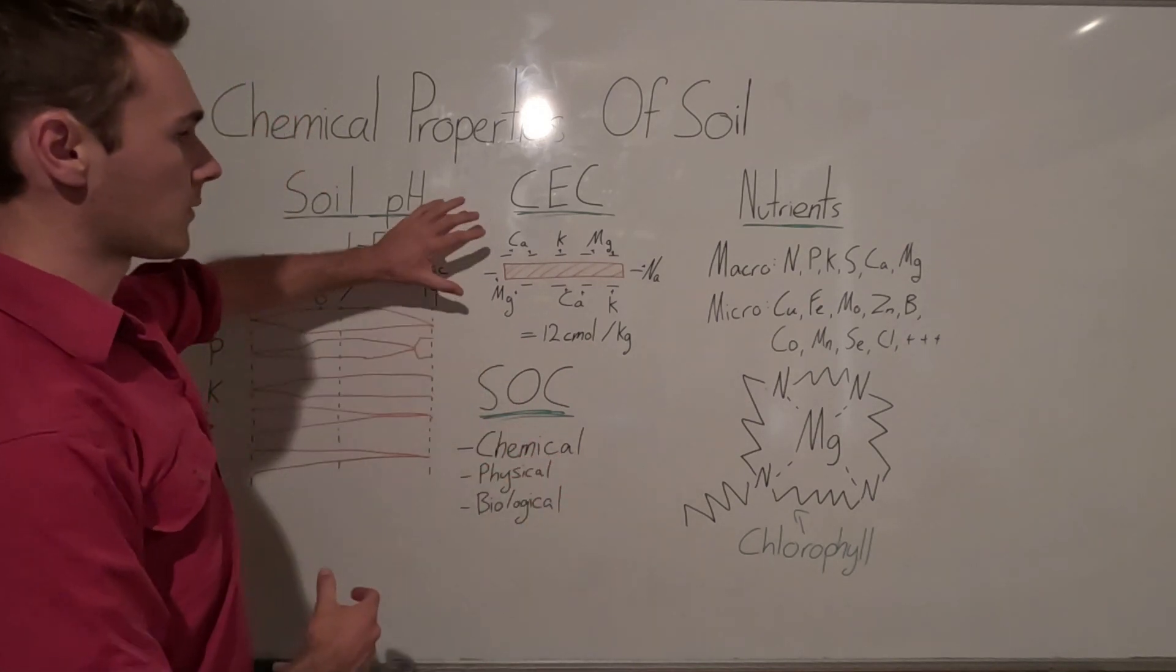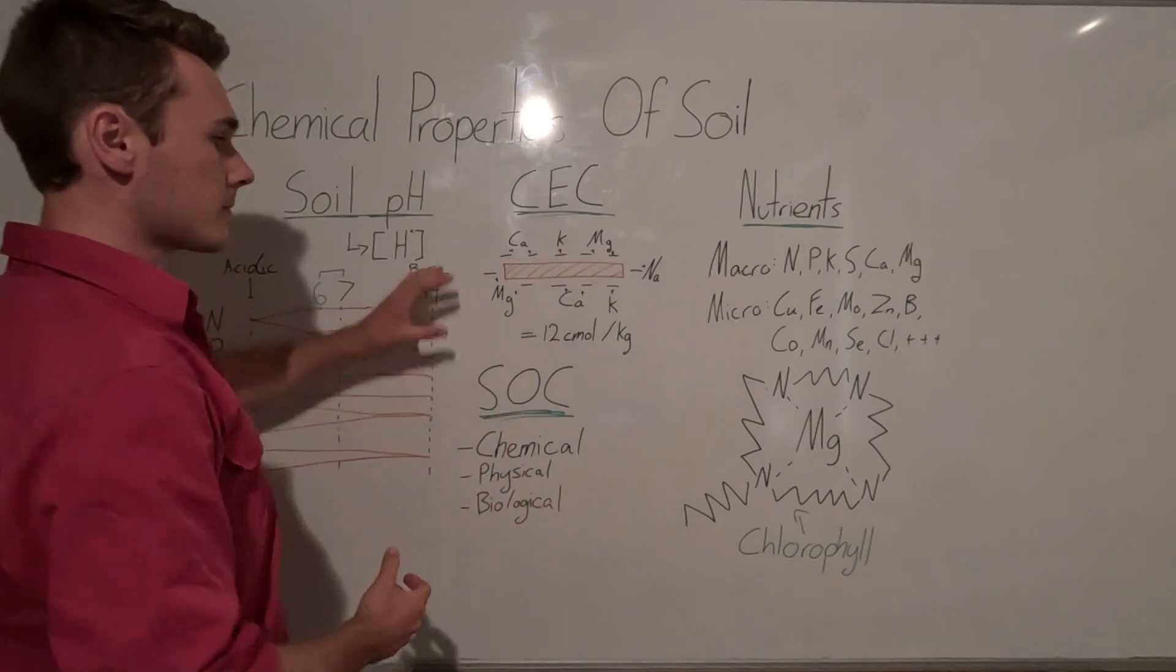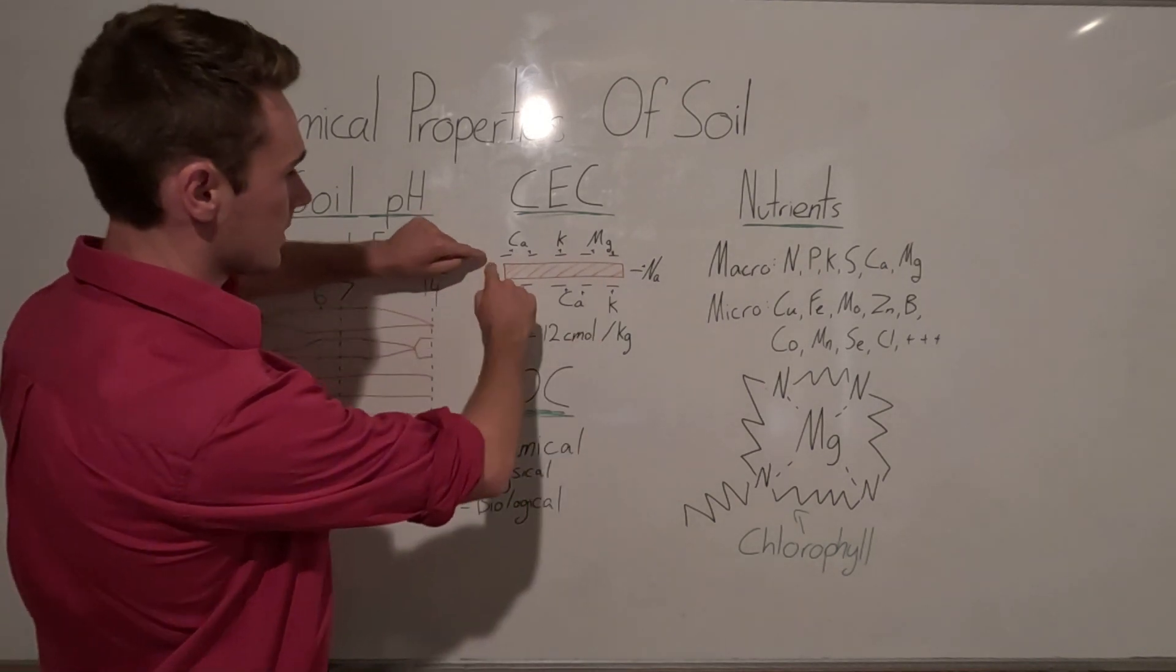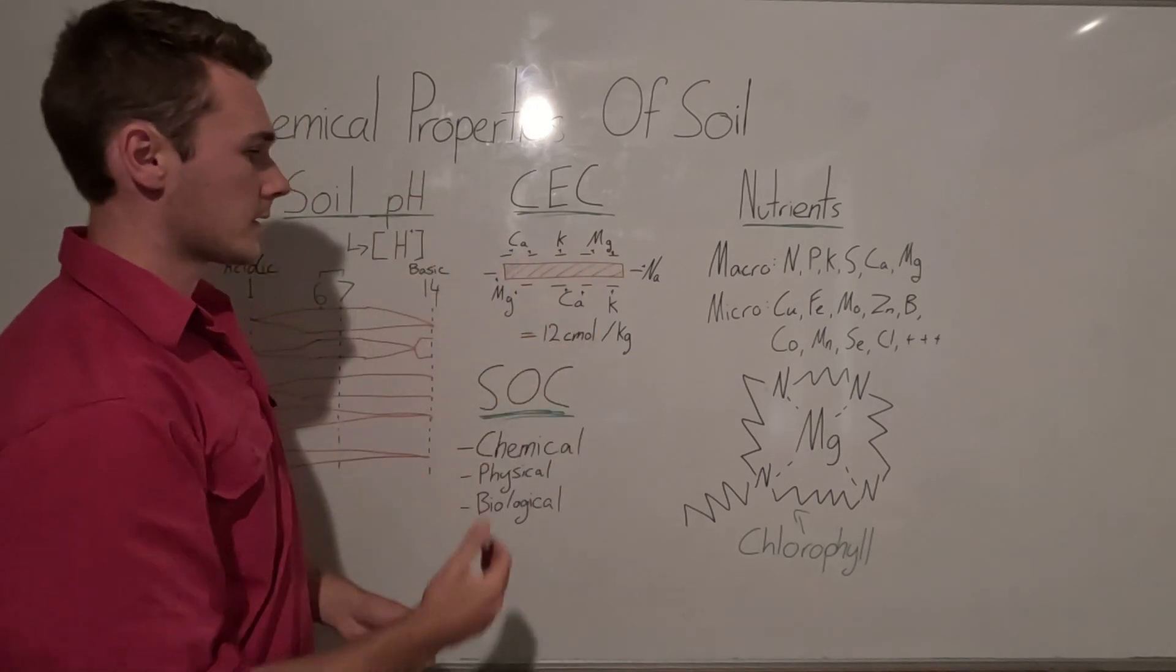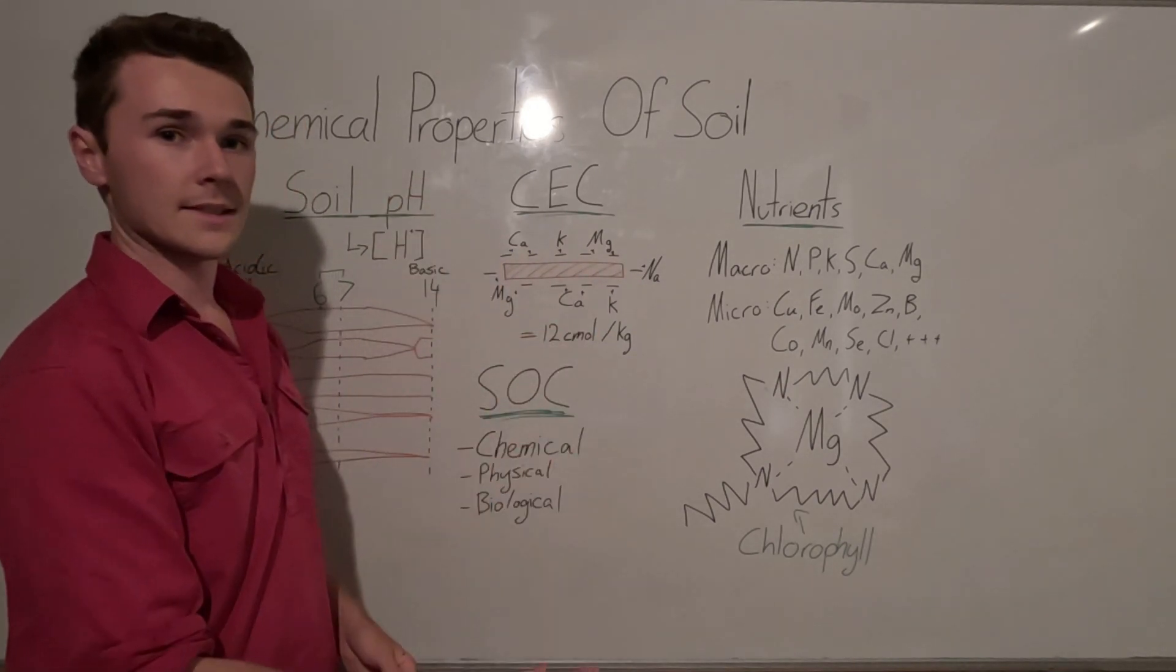And so the greater this negative energy within our soil, the greater the amount of cations that can stick to it. And so if you think of like almost like a magnet in our soil, that's going to have our negative sites, and then we can have our positive cations clinging to that.